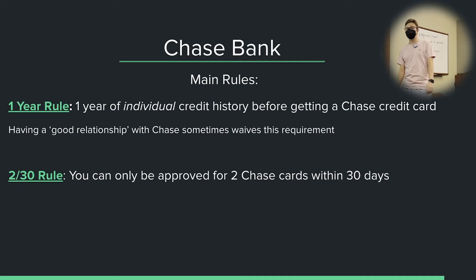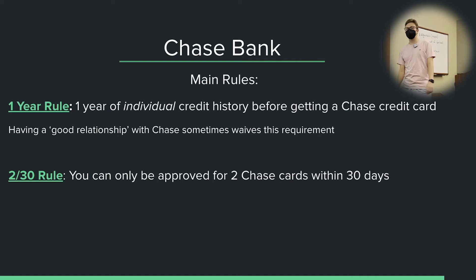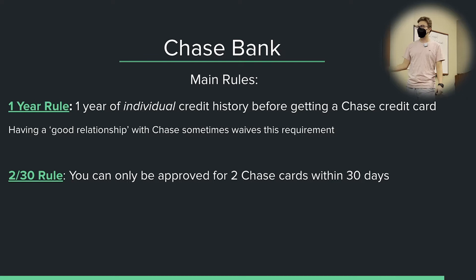The next rule is the 2/30 rule. This is not 100% a hard rule — they sometimes don't enforce it — but let's treat it as they always enforce it. You can only be approved for two Chase cards within 30 days of each other. If I apply for a Chase card today and another one today and get approved for both, I need to wait 30 days before getting any more, otherwise I will be automatically denied.